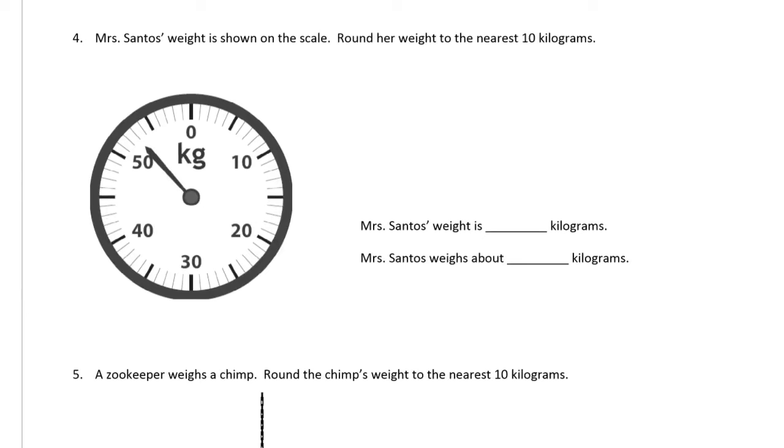Mrs. Santos's weight is shown on this scale, so here's the dial of the scale in kilograms. Round her weight to the nearest 10. So here we have markings at 10, 20, 30, 40, 50—this one is marked in tens and it starts at zero but when you come back around it's going to end at 60.